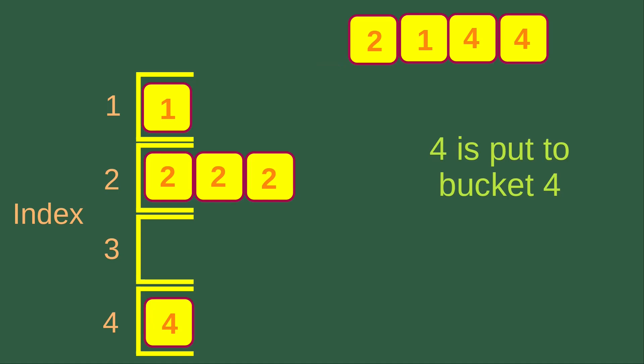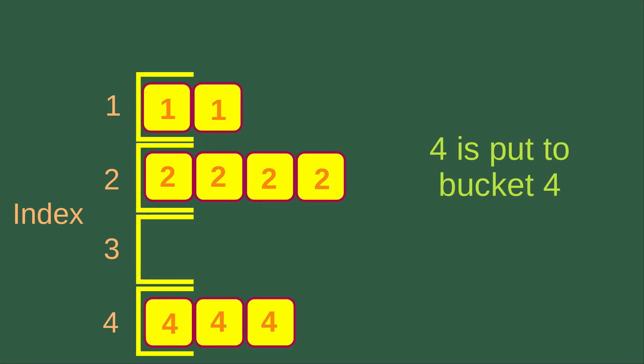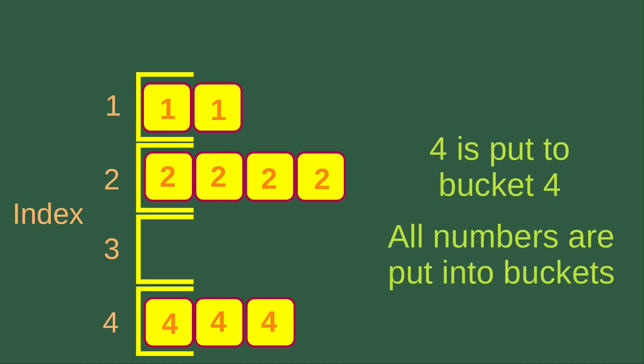Now I put another value, which is four, into the index four bucket — it is the first element in bucket four. Now I put another two into bucket two, giving us four twos in bucket two. Then I put one into bucket one again, so there are now two ones. Then I put another four into bucket four — now we have two fours. And I put the final four into bucket four. All numbers are now in their buckets.